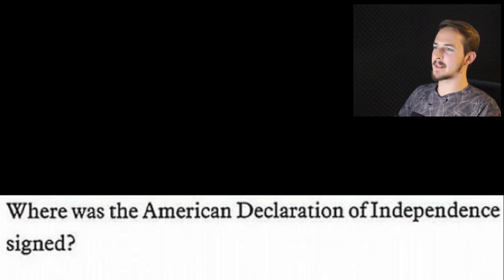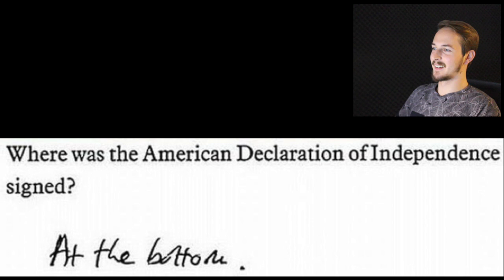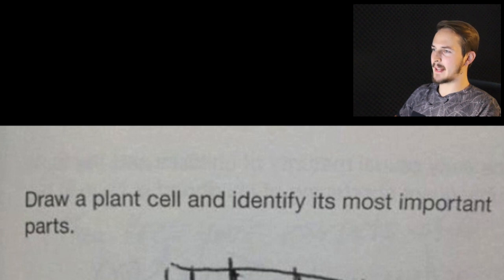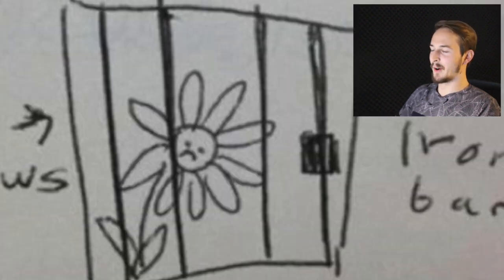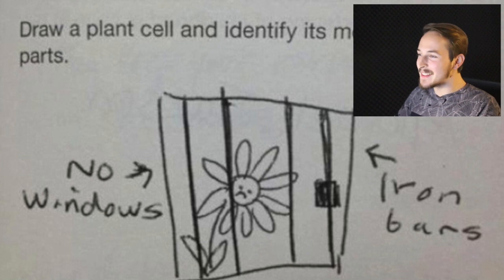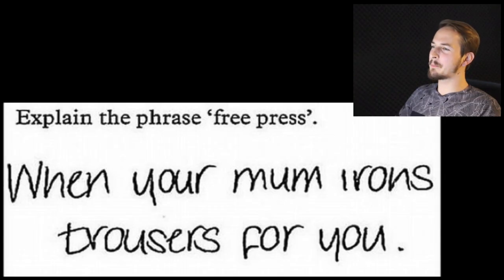Draw a plant cell and identify its most important parts. Oh look at this — a plant cell with iron bars and no windows. That poor plant, no windows! Explain the phrase 'free press': when your mom irons trousers for you.